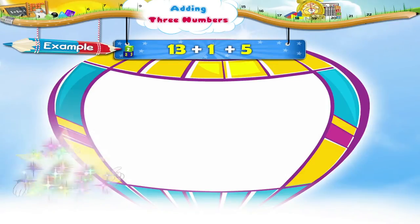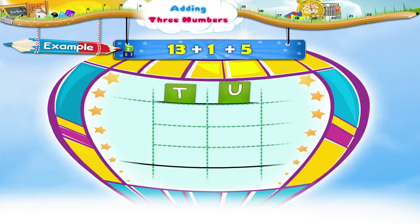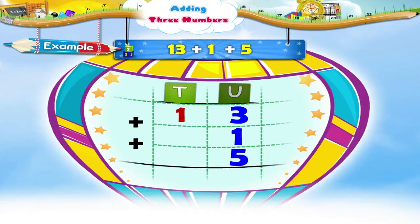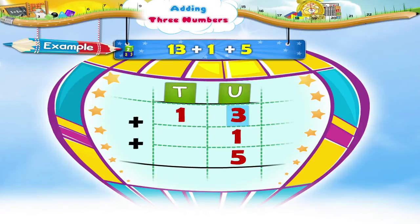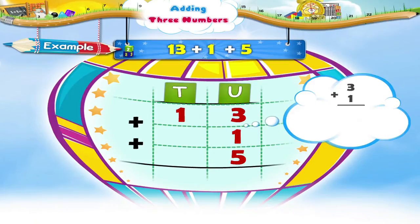Let's look at this example: thirteen plus one plus five. We arrange it vertically and write the units under the units and tens under tens. Now we add the digits in the units place: three plus one equals four, and four plus five equals nine.